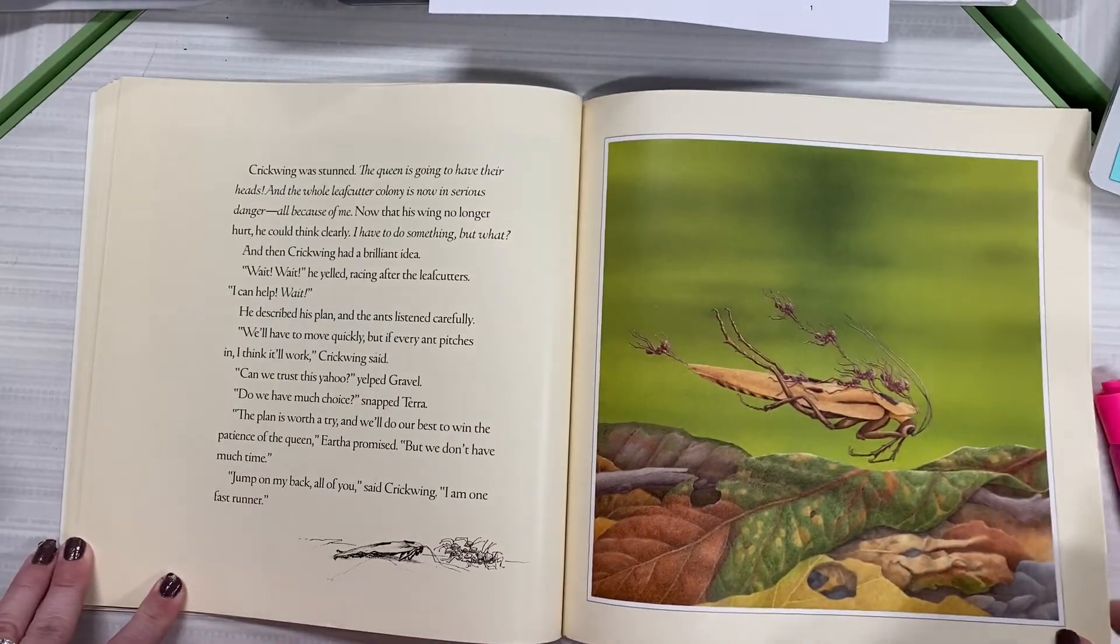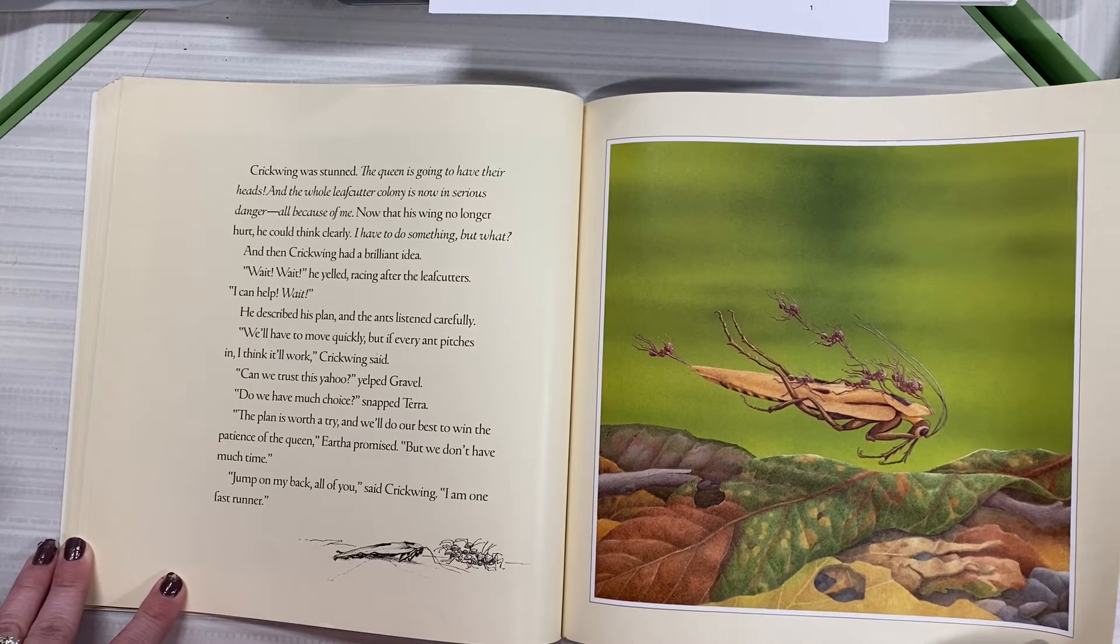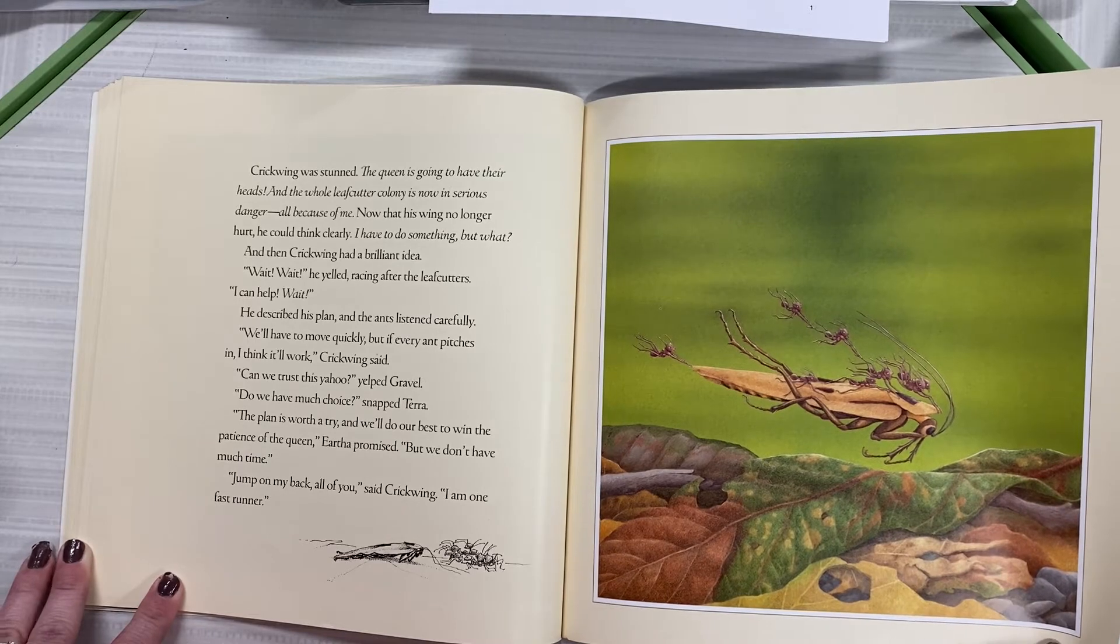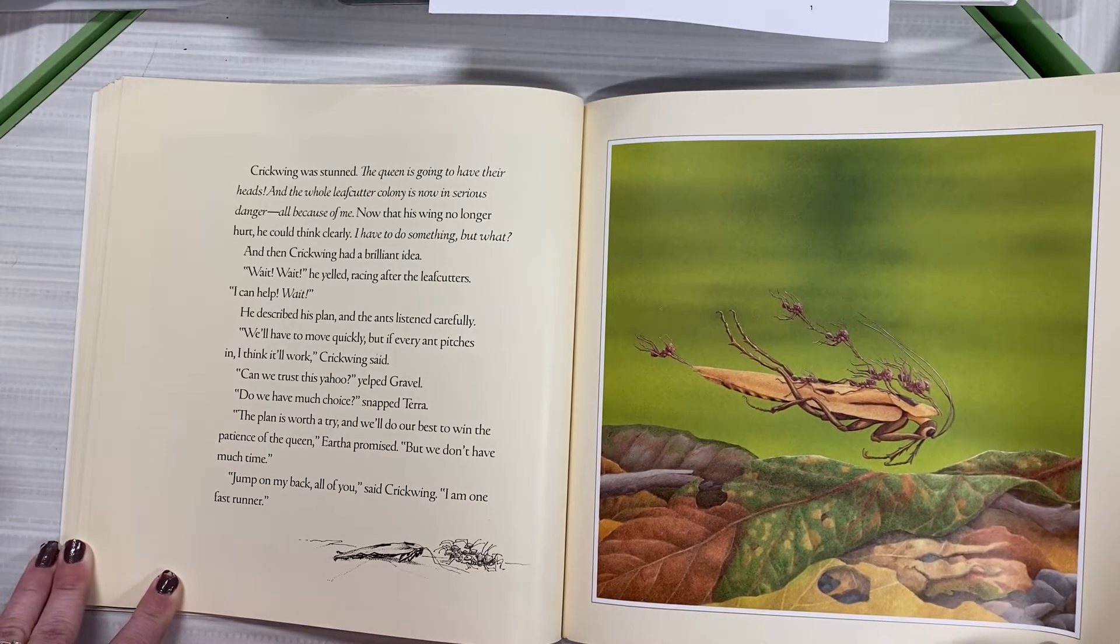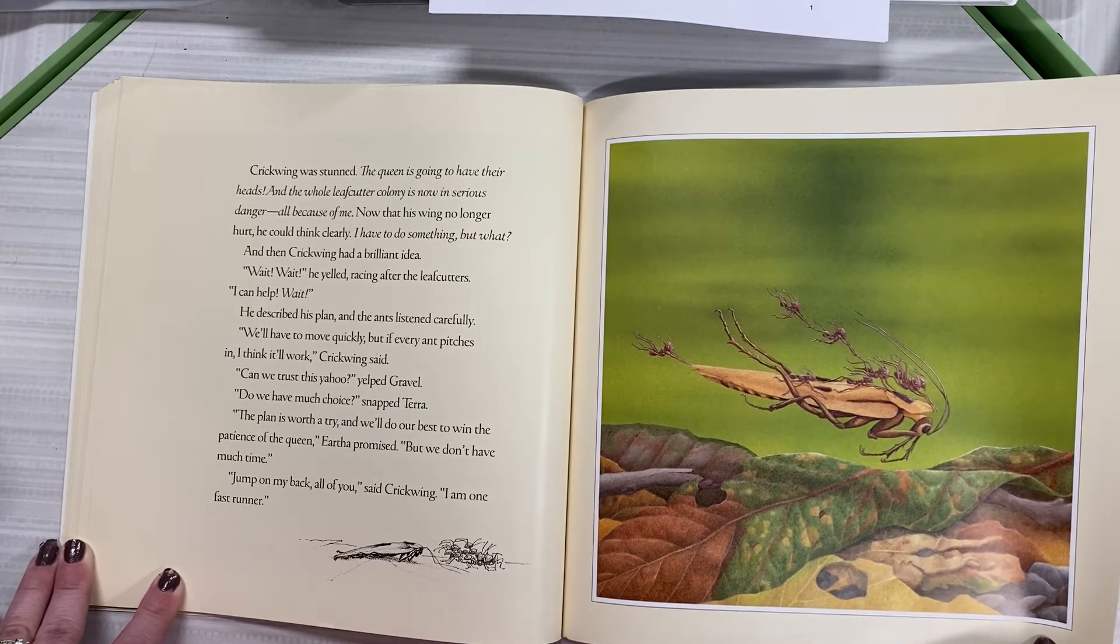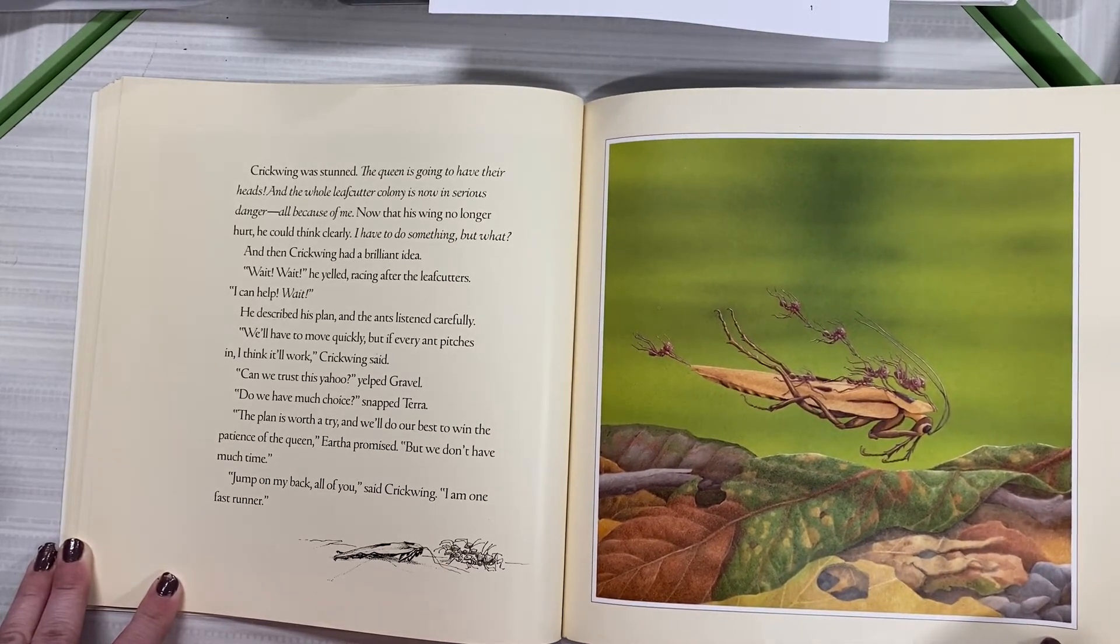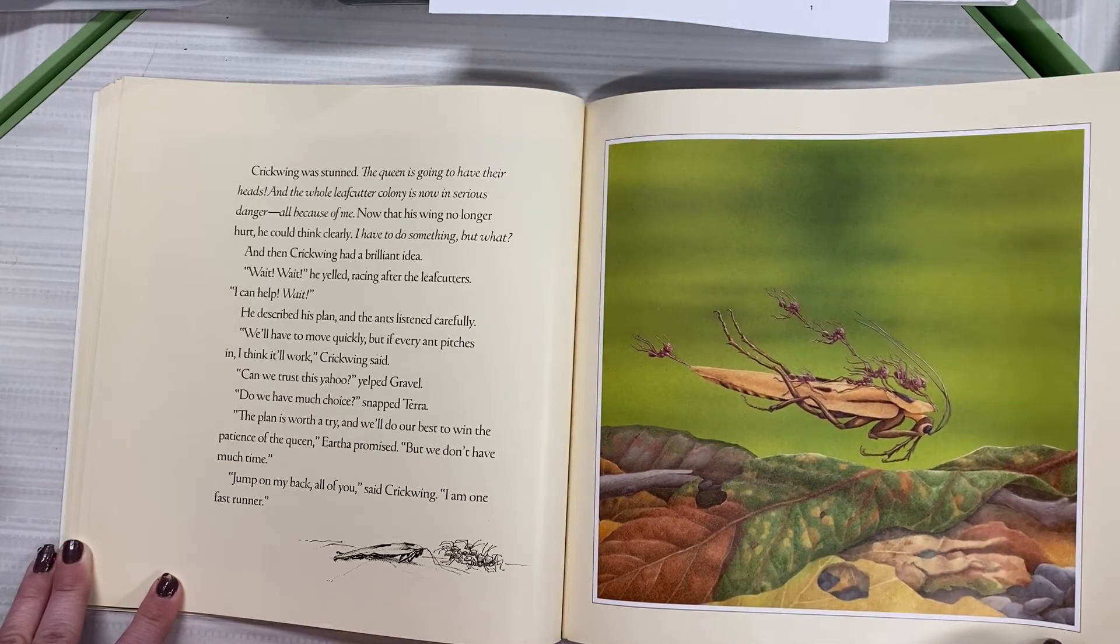Crickwing was stunned. The queen is going to have their heads and the whole leaf cutter colony is now in serious danger all because of me. Now that his wing no longer hurt, he could think clearly. I have to do something. But what? And then Crickwing had a brilliant idea. Wait! Wait! He yelled, racing after the leaf cutters. I can help! Wait! He described his plan and the ants listened carefully. We'll have to move quickly, but if every ant pitches in, I think it'll work, Crickwing said. Can we trust this yahoo? Yelped Gravel. Do we have much choice? snapped Tara. The plan is worth a try and we'll do our best to win the patience of the queen, Eartha promised. But we don't have much time. Jump on my back, all of you, said Crickwing. I am one fast runner.